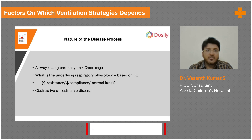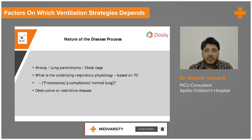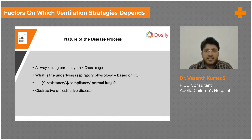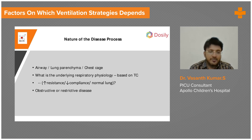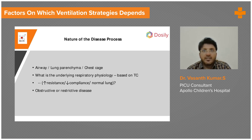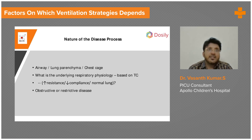First, consider the nature of the disease process. If it is in the lung, determine whether it is an airway problem, a parenchymal problem, or a chest cage problem. Then consider the underlying physiology: if it is a lung problem, you need to know whether it is a compliance problem or a resistance problem. A compliance problem involves the lung parenchyma — like ARDS, pneumonia, or pulmonary edema. A resistance problem is usually asthma in children, COPD in adults, or upper airway obstruction.